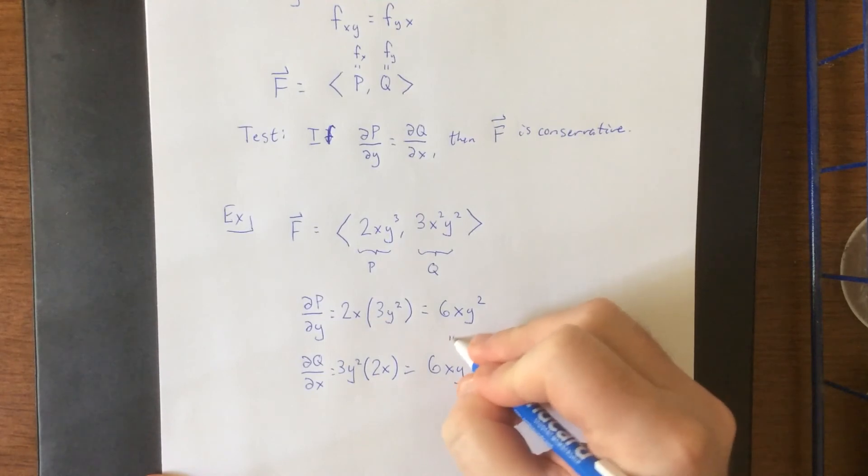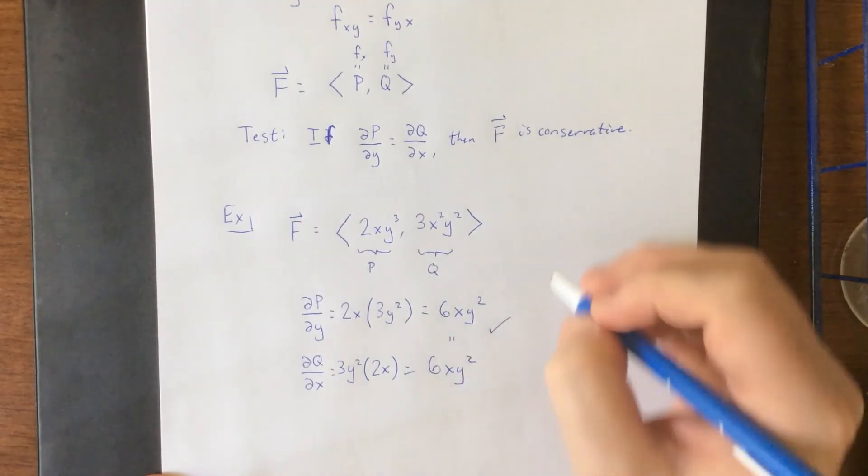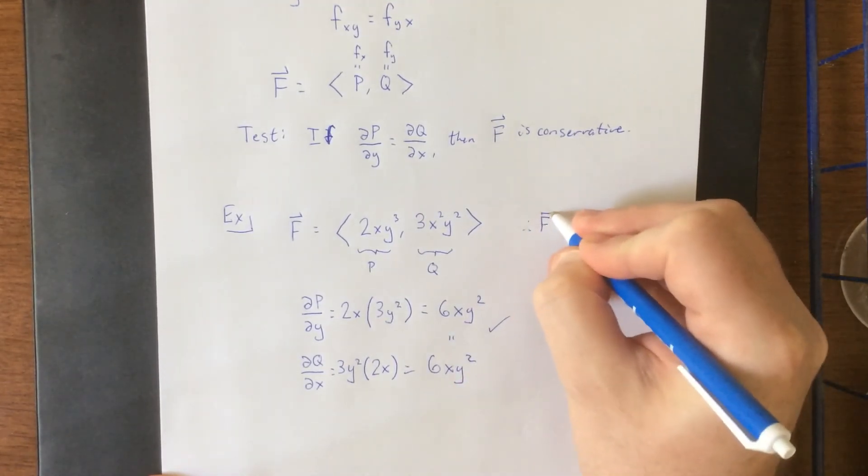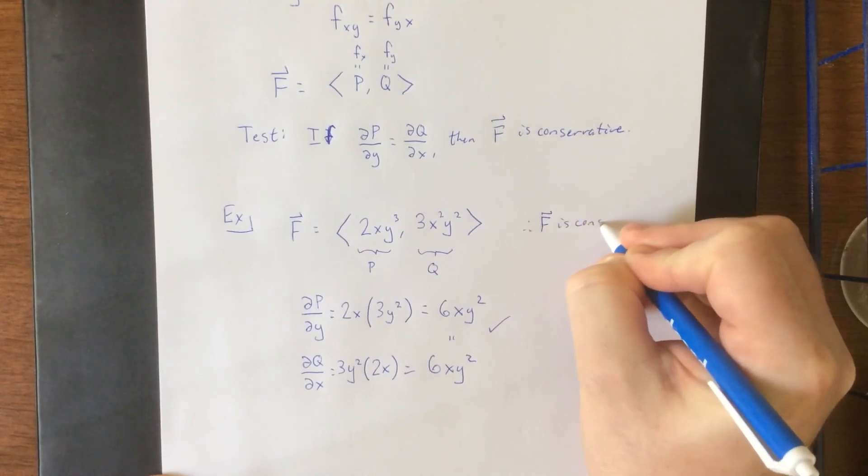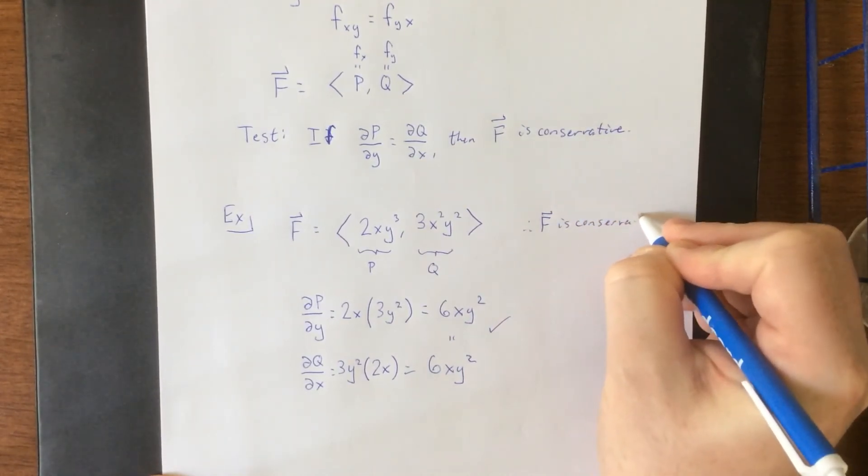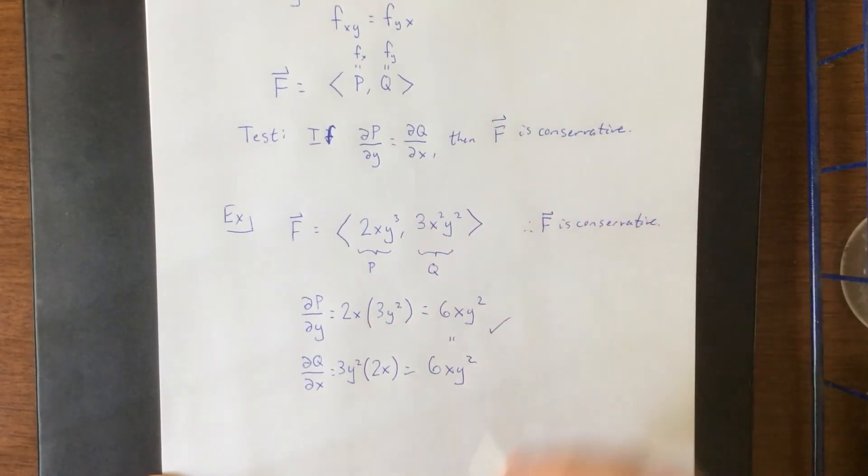You'll notice that these two things are equal to each other, therefore f is conservative. Now once you verify that something is conservative, the next big step is going to be determining the generating function, and we will do that in the next video.